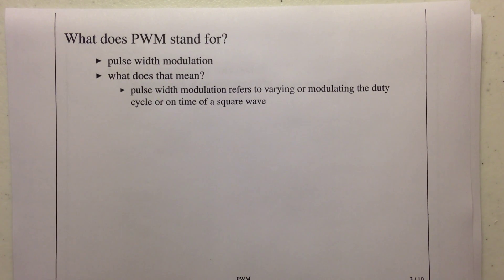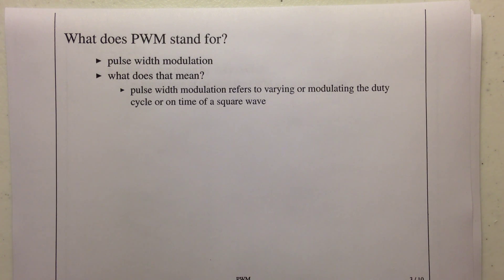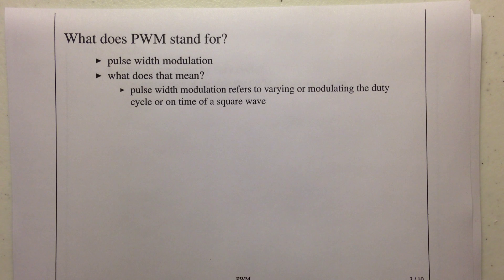So Pulse Width Modulation — what do we mean by modulation? Modulation, sort of like on the radio. Frequency Modulation is FM and Amplitude Modulation is AM. The basic idea is that you have some kind of carrier frequency — that's kind of the station that you dial into. And then there's an additional signal that rides on top of the carrier signal that actually carries the music.